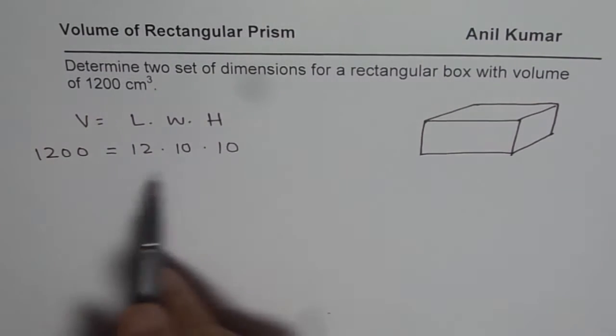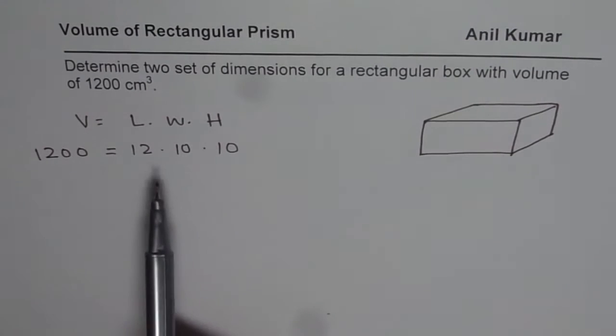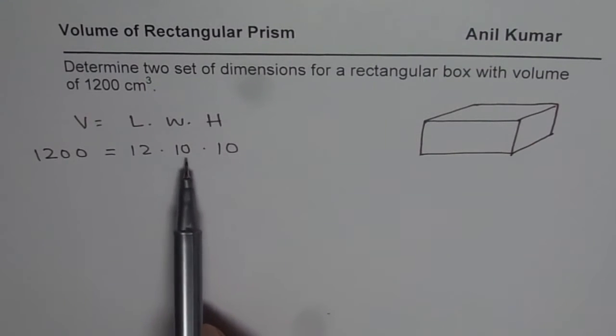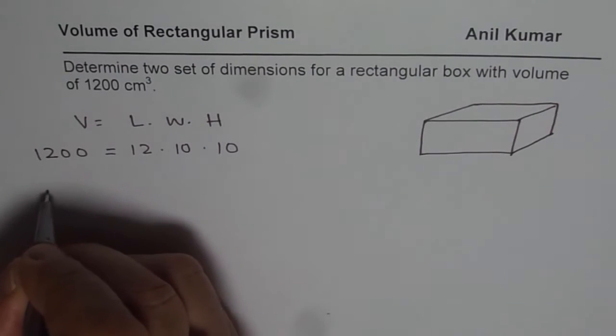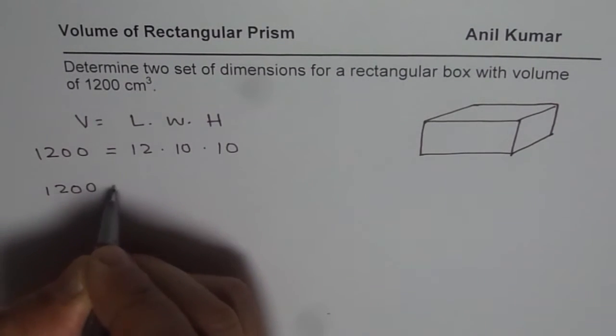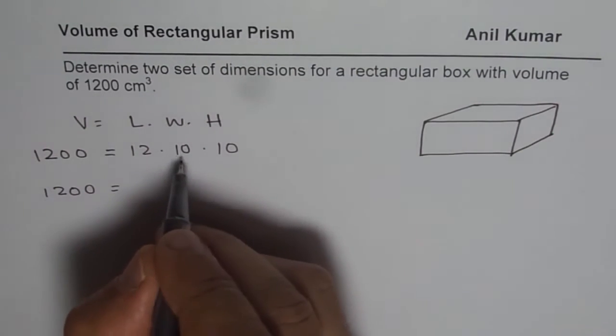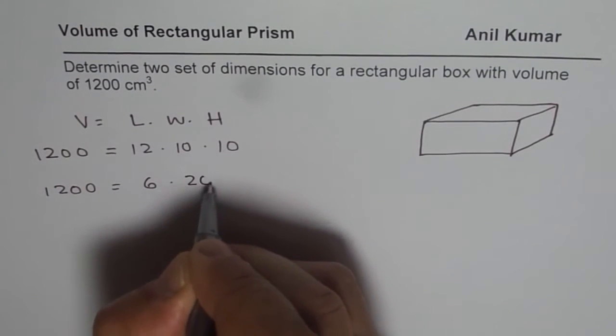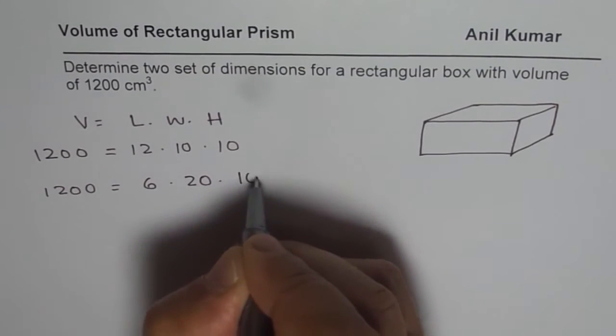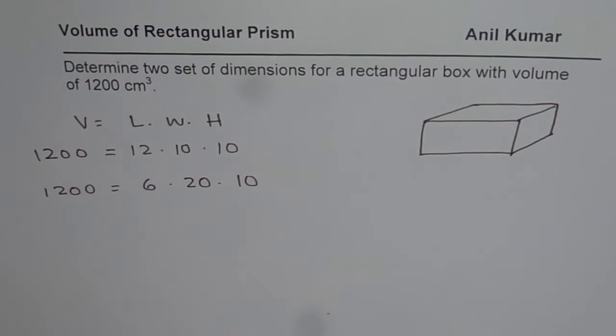So that gives us one dimension. 12 times 10 times 10 will also give you 1200. We could also write 1200 as, instead of 12 times, we could say 6 times 20 times 10. That is also 1200.